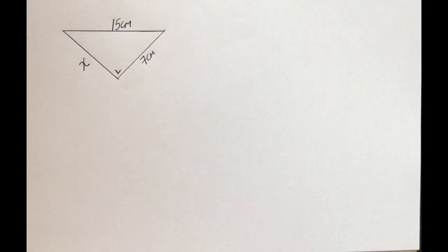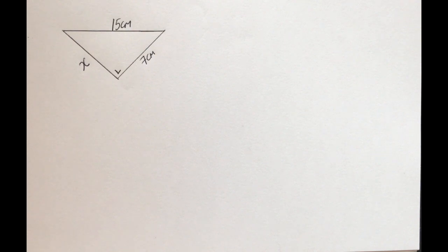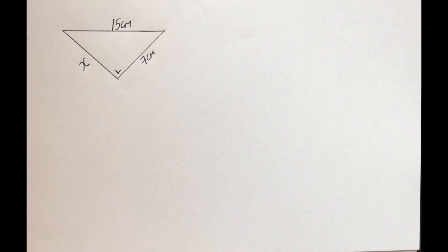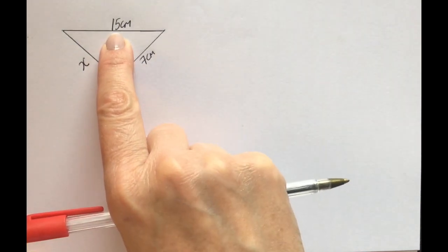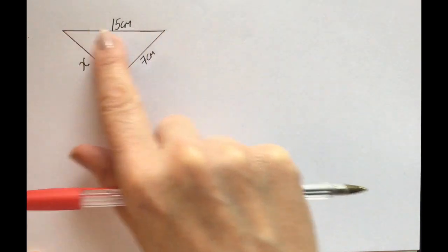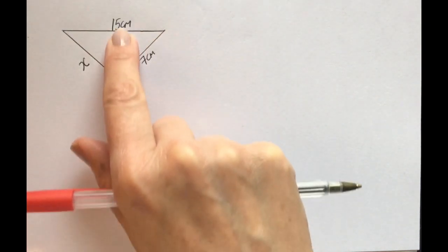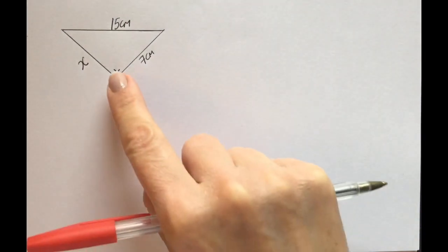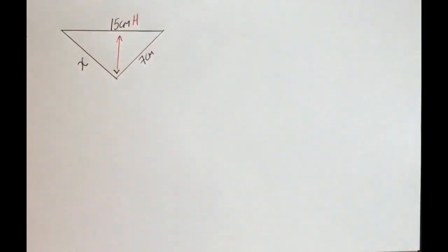Final example — again we can see we have a right-angled triangle. We are given two sides and we are looking for a side, so we know to use Pythagoras. Pause the video and see how you get on. The first thing we want to identify is which side is the hypotenuse. The hypotenuse is always opposite the 90 degrees and this is the longest side. Just be careful — it has to be the longest side opposite the 90 degrees. Opposite the 90 degrees, that one there is the hypotenuse.